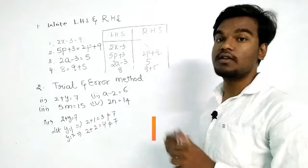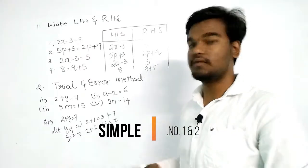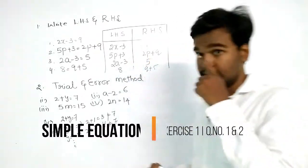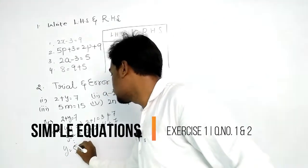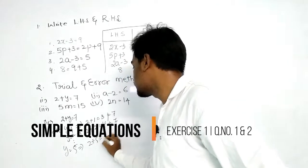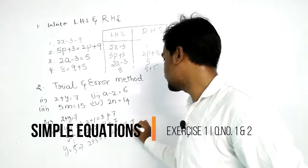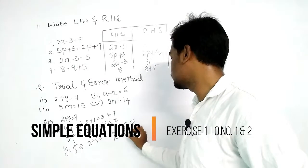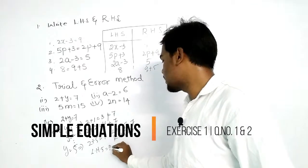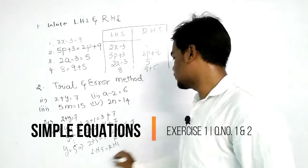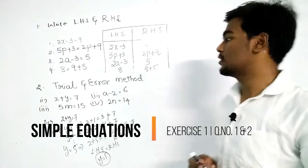Continuing to increase the value — trying 1, 2, 3, 4 — if y equals 5, then 2 plus 5 equals 7. So LHS equals 7 and RHS equals 7, meaning LHS equals RHS. Therefore, by using the trial and error method, we got y equals 5.